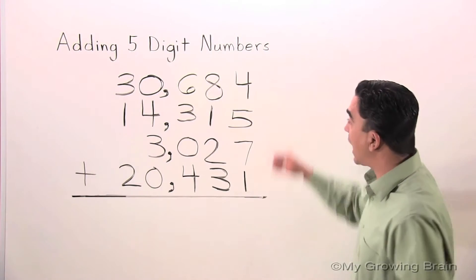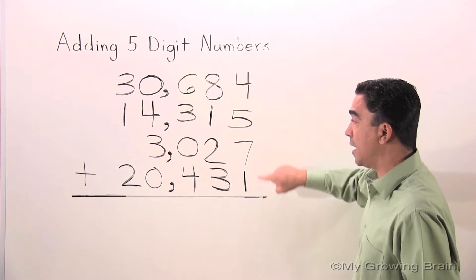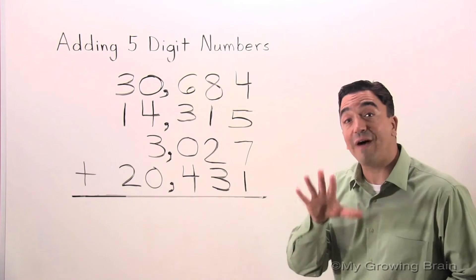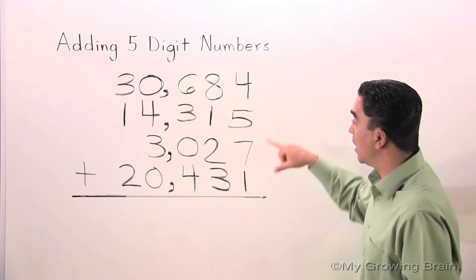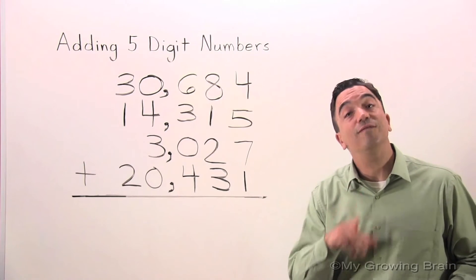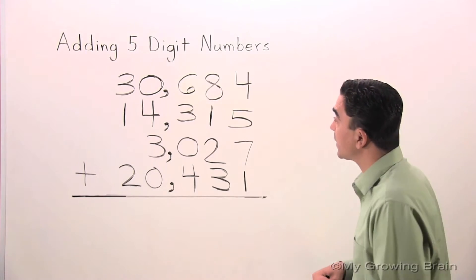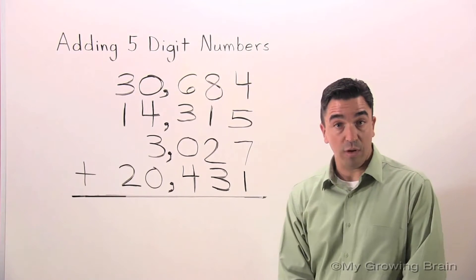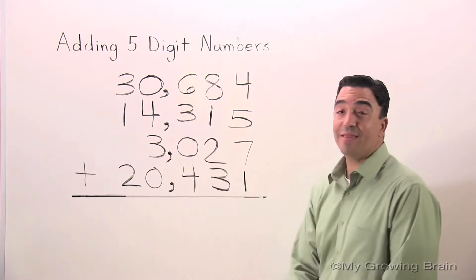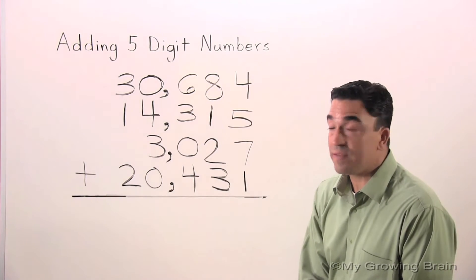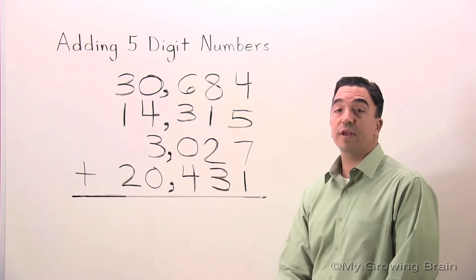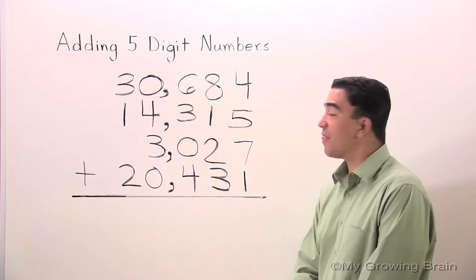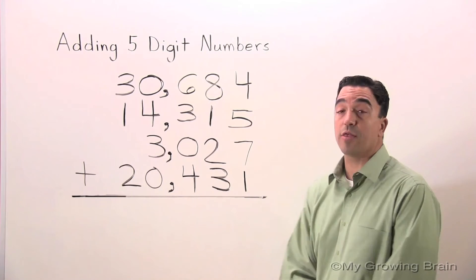On the board, I have four numbers. Three of them are five-digit numbers, one of them is a four-digit number. I have 30,684, 14,315, 3,027, and 20,431.